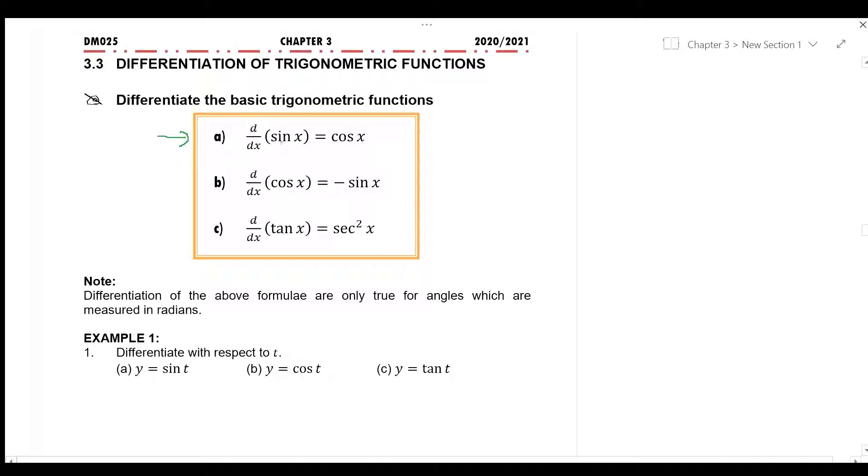Differentiate sin x, we will get cos x. Differentiate cos x, we will get negative sin x. And finally differentiate tangent x is equal to sec² x. Note that differentiations of all these formulas are only true for angles which are measured in radians.